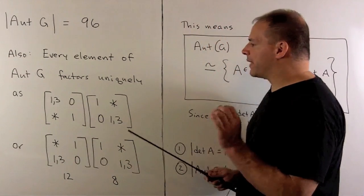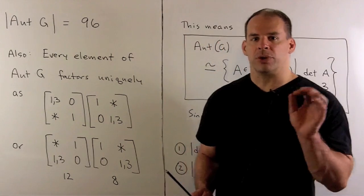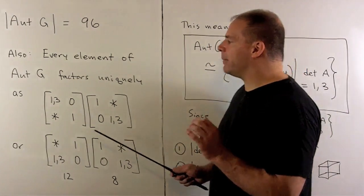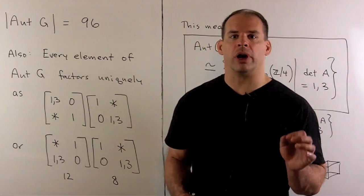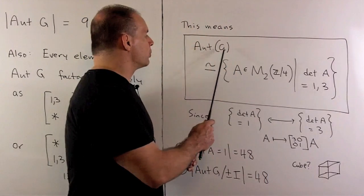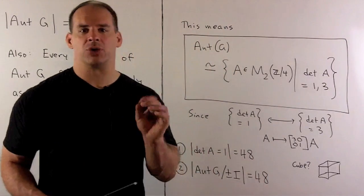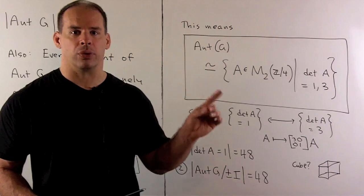Now, having matrix factorizations is nice, but what we can get from this, using the product rule for determinant, we have that the determinant of any matrix associated to an automorphism is equal to 1 or 3. So, that lets us state the automorphism group is isomorphic to the set of 2 by 2 matrices with entries in Z mod 4, such that the determinant is equal to 1 or 3.